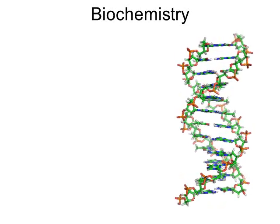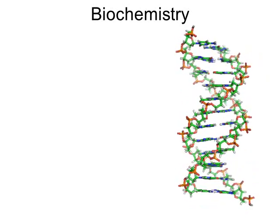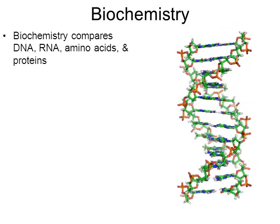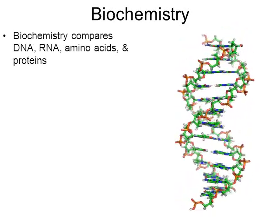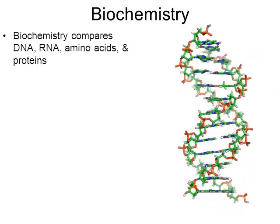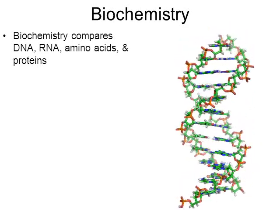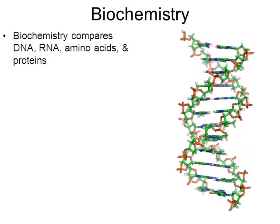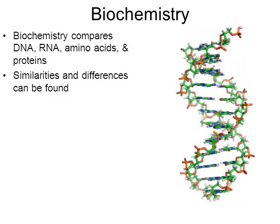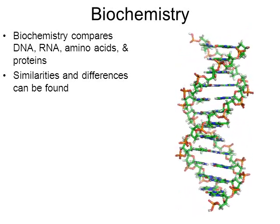One of the biggest areas of biology that has helped us better understand classification and taxonomy is biochemistry. In biochemistry, we're learning to compare the DNA, chromosomes, RNA, amino acids, and proteins — the chemistry of living organisms. We're learning to see how we can determine who's more closely related based on DNA, amino acids, and chromosomes. Similarities and differences can be found — for example, we can look at the similarities of human DNA and chimpanzee DNA and identify differences.